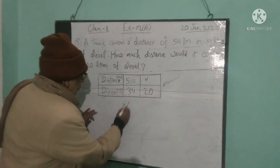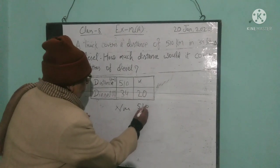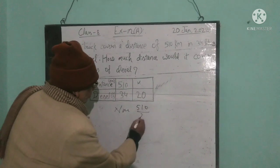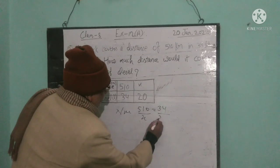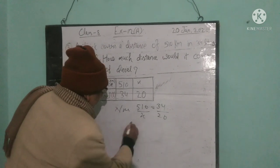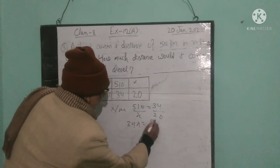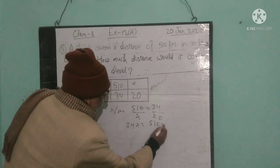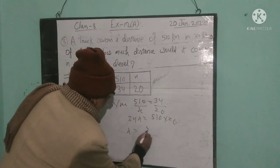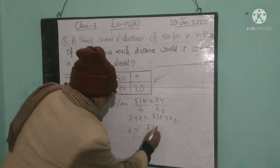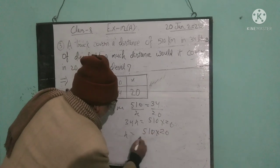Now, 510 by X equals 30 by 20. So 30X equals 510 into 20. X equals 510 into 20 divided by 30.